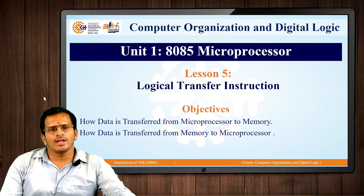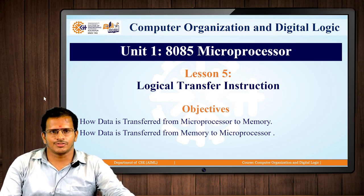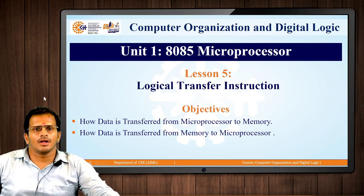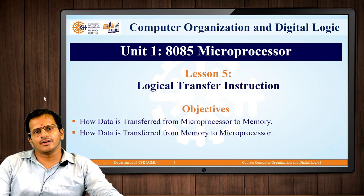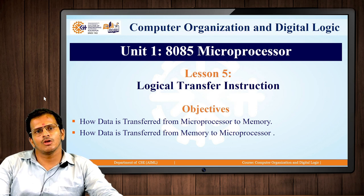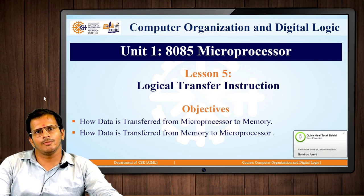We are looking at Unit 18085 and Lesson 5 of it is logical transfer instructions. Here we will understand how to transfer data from the microprocessor to memory and from memory to the microprocessor using logical transfer instructions. In the last lecture we had seen about data transfer instructions like MVI and LXI. In this lecture we will be looking at the logical transfer instructions.